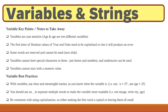Some words are reserved and cannot be used as variable names, and we will see these in the next slide. Variables cannot have special characters in them — just letters, numbers, and underscores can be used. The underscore is the exception and can be used, but no other special characters. And the last rule is variables cannot start with a numeric value.